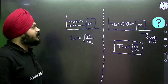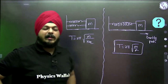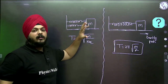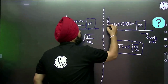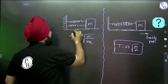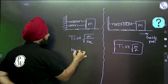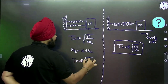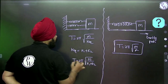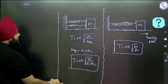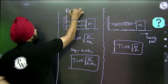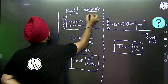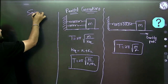The equivalent T is equal to 2π under root of M by K equivalent. We have seen this concept in the work-energy and power section — what happens when springs are connected in series or in parallel. In parallel, K equivalent is equal to K1 plus K2, so the final time period is under root of M by K1 plus K2.